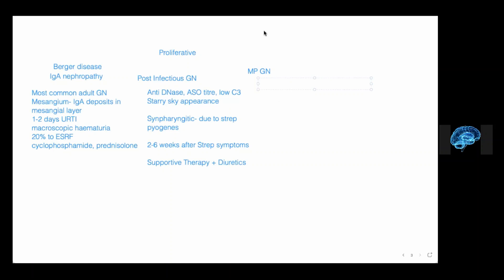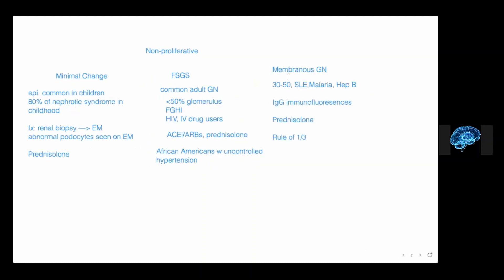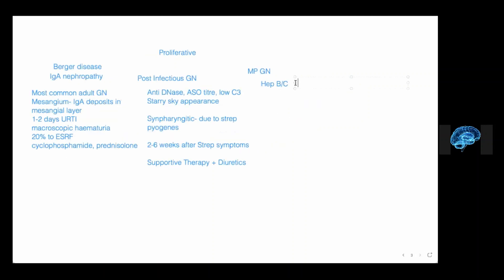Membranoproliferative glomerulonephritis — though I've put it under proliferative, it can cause nephrotic syndrome as well, and there's usually an overlap. There are three types: type 1, type 2, and type 3. Type 1 is associated with hepatitis B and hepatitis C, SLE, and subacute bacterial endocarditis.